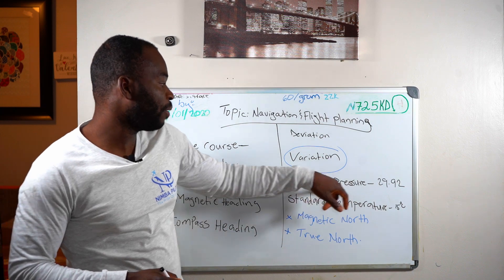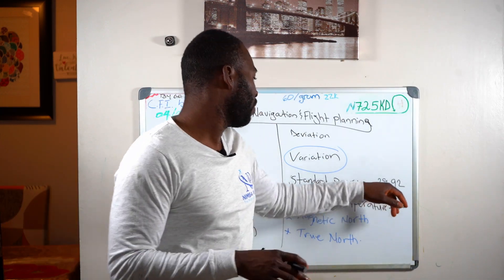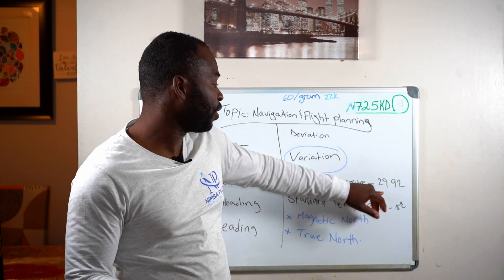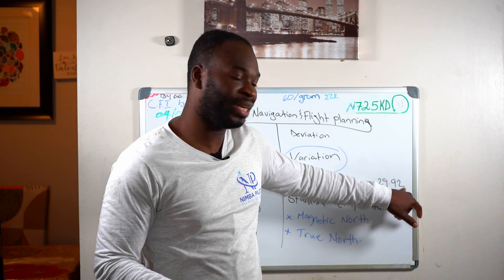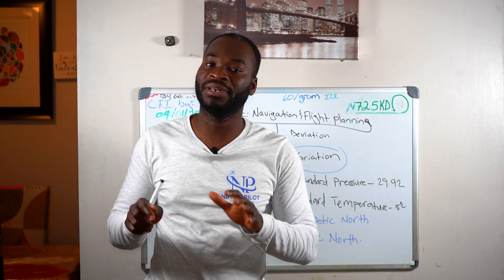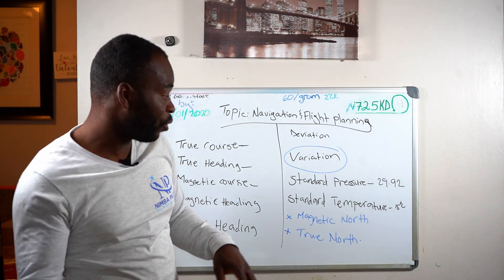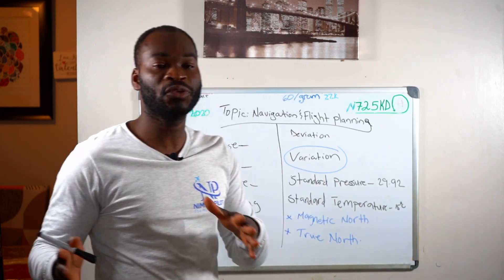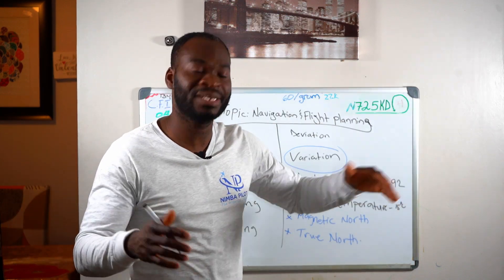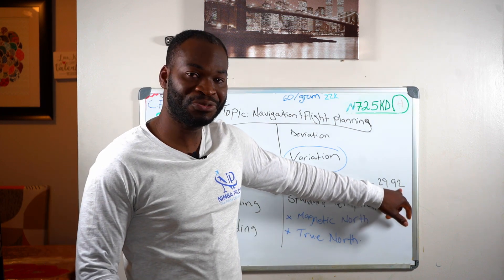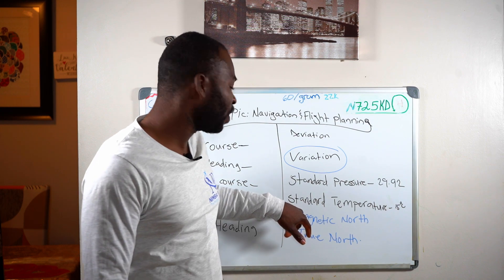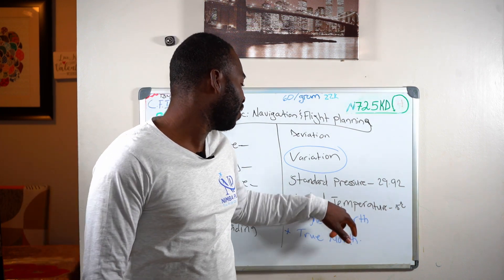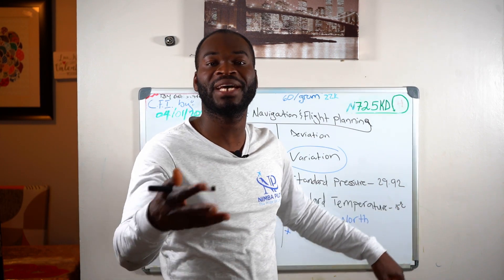Our next term is standard pressure. In aviation, we use the main sea level for our pressure measurements. On a standard day, our sea level pressure is 29.92 inches of mercury. That is our standard pressure on a normal day. On a standard day, our temperature at sea level is 15 degrees Celsius, which equals 59 degrees Fahrenheit. In aviation, regardless of what country you find yourself in, we use Celsius — you have to convert it. That is our international aviation language so that we are all on the same page.